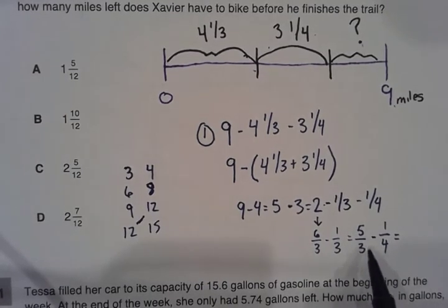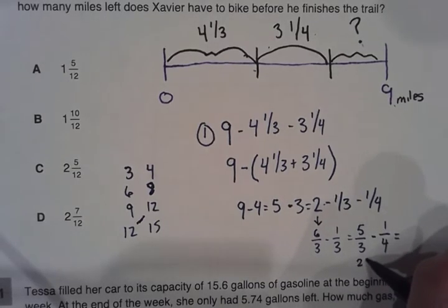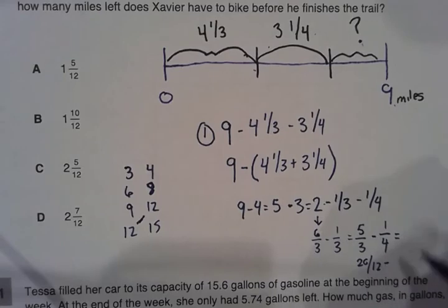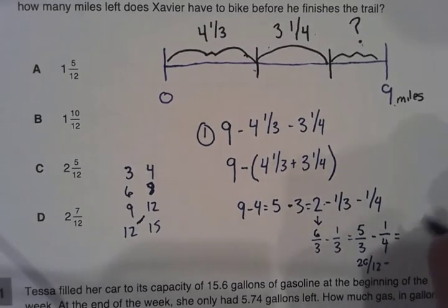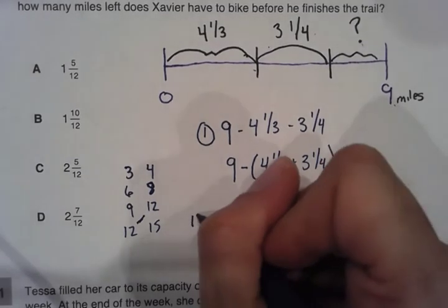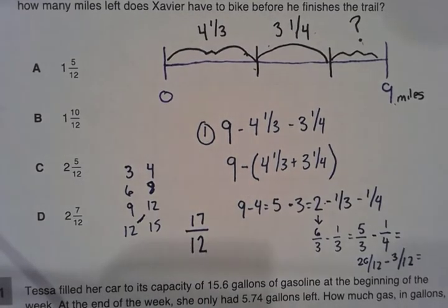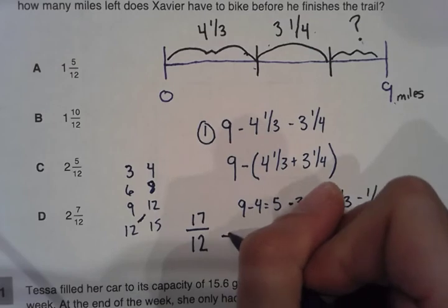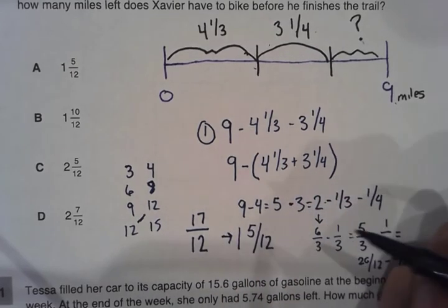So five over three, I need to multiply that by four over four. So five times four, that's going to get me twenty over twelve. And then one over four, I need to multiply that by three over three. So that's going to give me three over twelve. When you subtract the two, that's going to give us seventeen over twelve. Now what is that as a mixed number? Well, that's going to be one and five-twelfths.